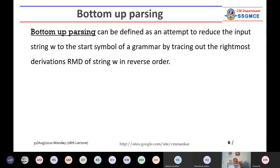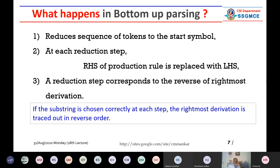In bottom-up parsing: it reduces the sequence of tokens to the start symbol. At each reduction step, the right-hand side of a production rule is replaced by the left-hand side. A reduction step corresponds to the reverse of the rightmost derivation. If a substring is chosen correctly at each step, the rightmost derivation is traced out in reverse order.